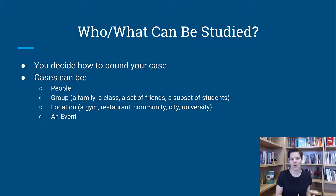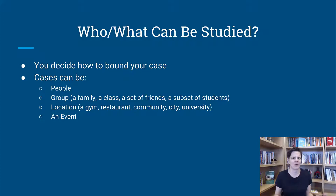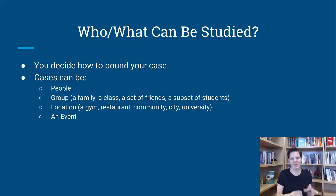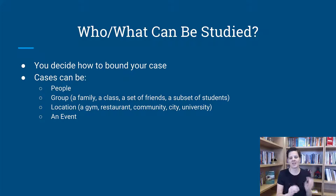Cases can be people. It can be one person, or it can be a multi-case study — you can have up to around five people. You probably don't want a lot more than five individuals. A person or a group of people can be a case in and of themselves. So one person can be a case, but you might also have five people in your study, and each one of those people can be an individual case related to your research question, helping you understand it in some way.